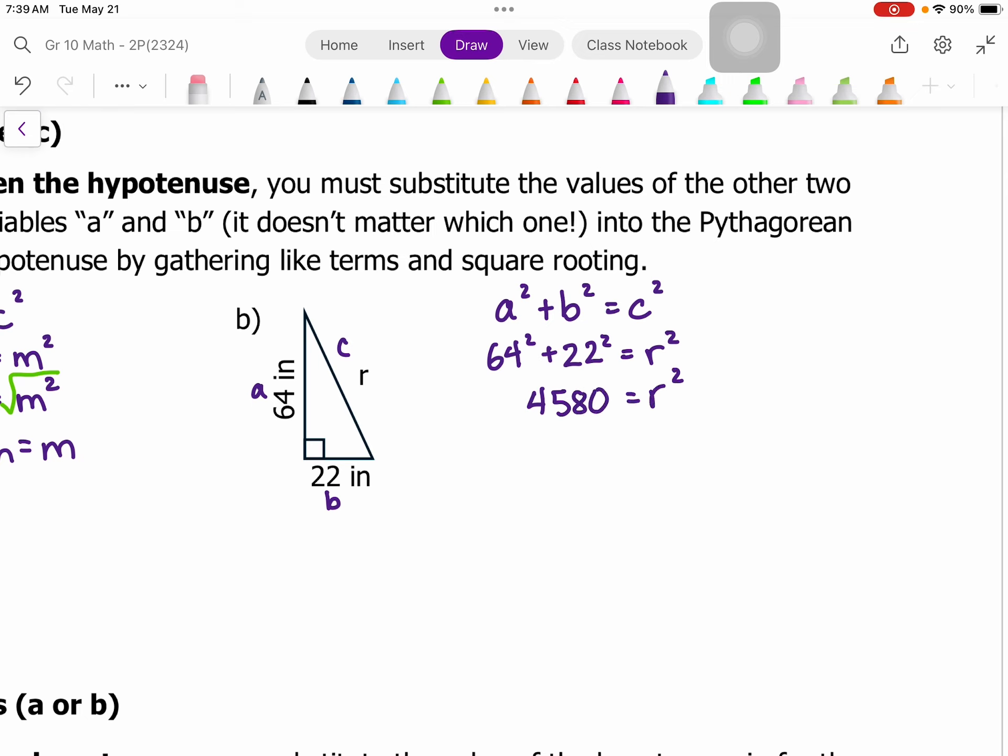Now if I square those two numbers and add them together, that's equal to 4580. Next step is going to be to square root to solve for just r. And the square root of that is 67.7, and our units are in inches. So r is equal to 67.7 inches.